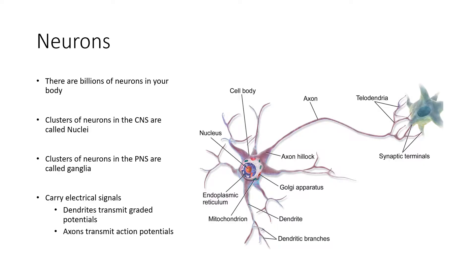Beginning with neurons, there are billions of neurons in your entire body. Clusters of neurons in the central nervous system are called nuclei. Clusters of neurons in the peripheral nervous system are called ganglia. These carry electrical signals. There are different types of potentials—graded potentials and action potentials—which we'll go over briefly.